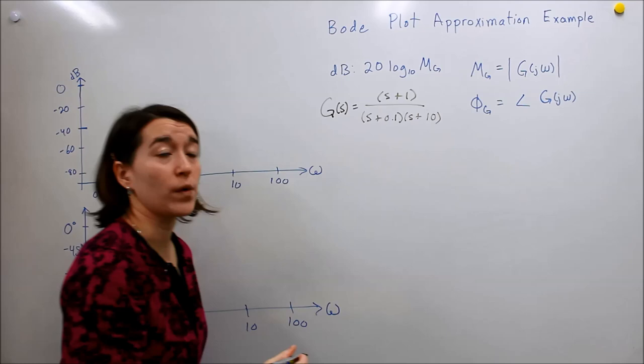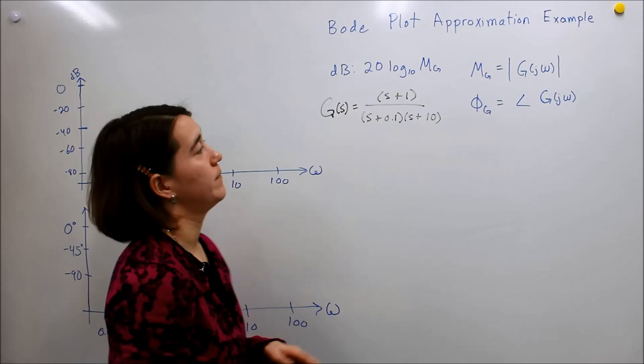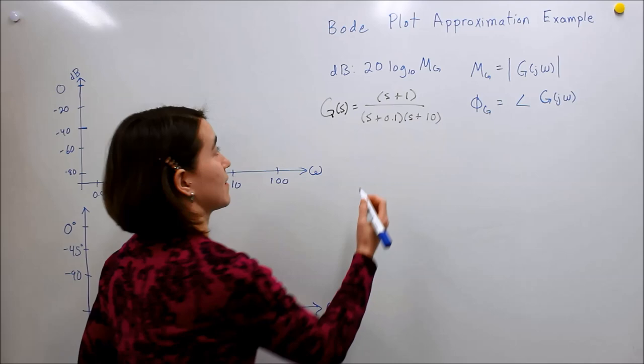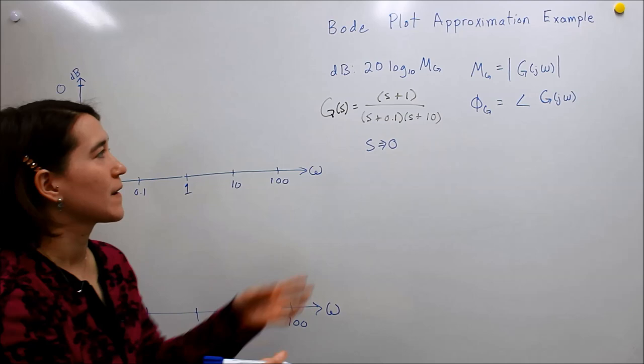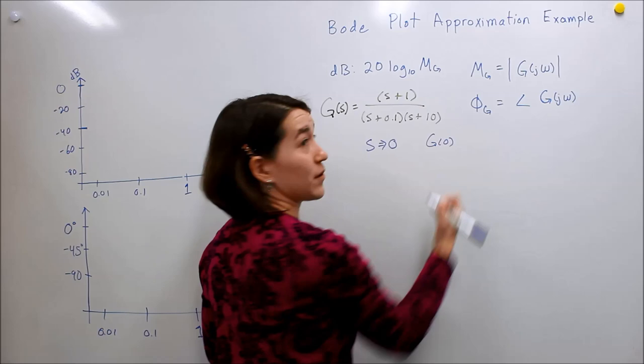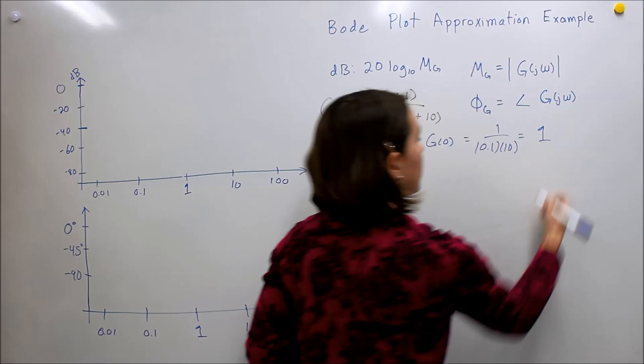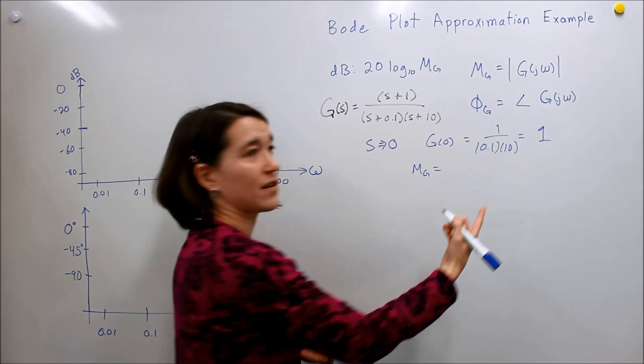What does this look like if we take the frequency response? The way I like to start a problem is to look at what the system looks like at very small values of s — as s approaches zero. In this case, if we take G(s) at s equals zero, we get just 1 divided by 0.1 times 10, which equals one. Taking the magnitude, log base 10 of one is zero, so we have zero dB.